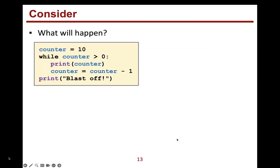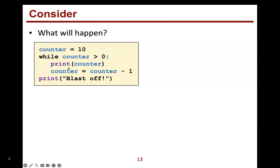Here's an example: counter equals 10, so we're creating an integer variable with value 10. While the counter is greater than zero, we print the counter, then decrease it — counter equals counter minus one. That is the loop body: those two lines. Then after the while loop, we print 'blastoff'.